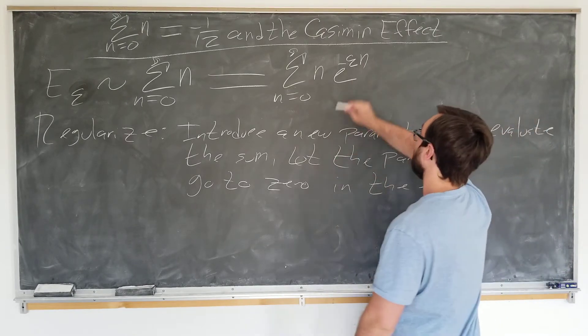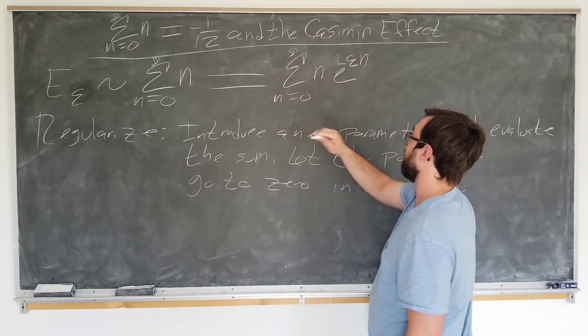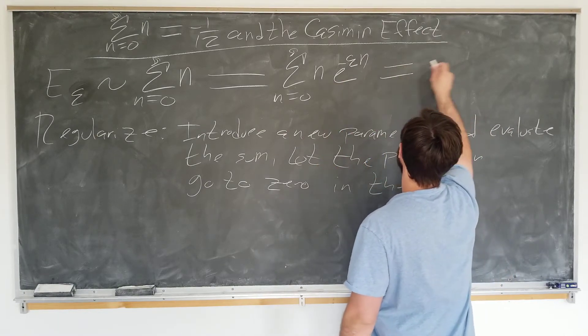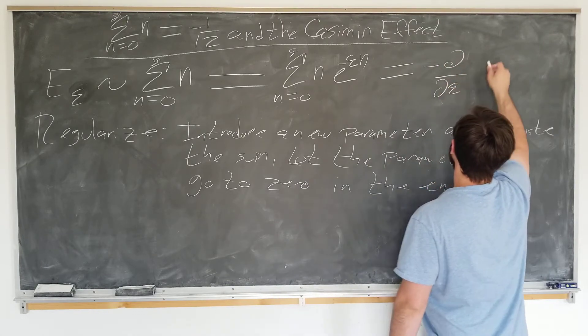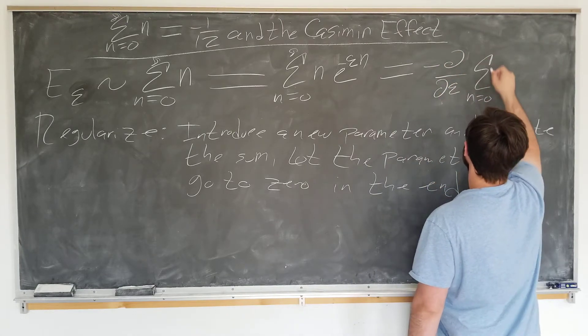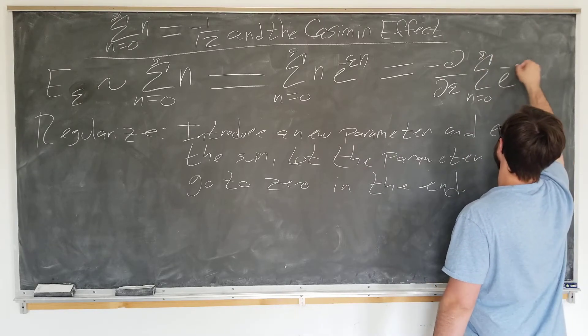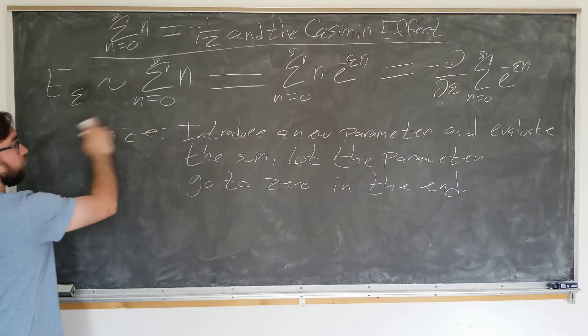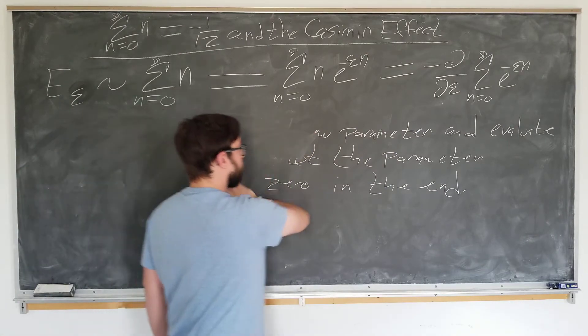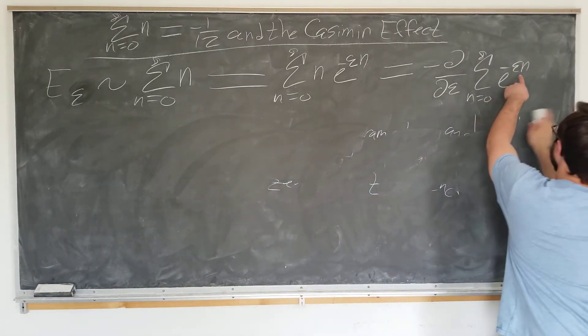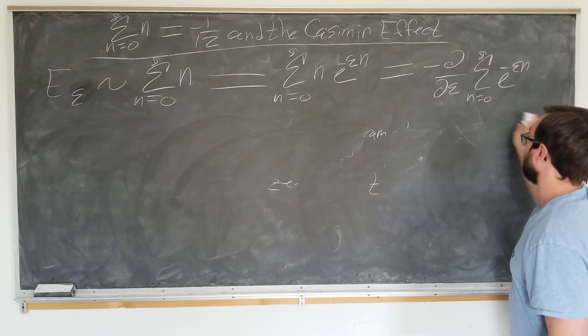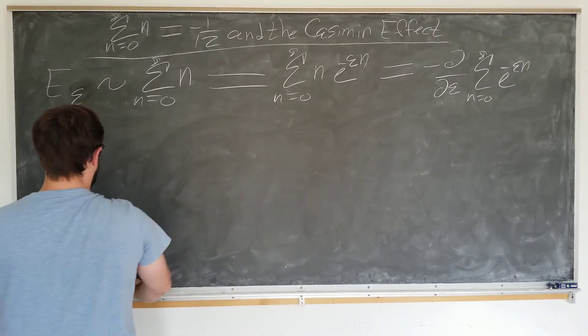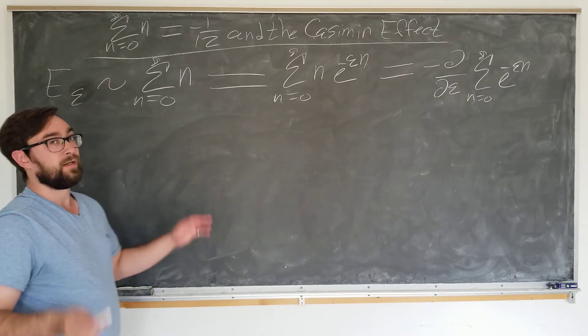Alright, let's first recognize that we can write this sum as a derivative of a simpler sum in epsilon. This is going to be minus d/dε, sum of e to the minus epsilon n. If you can't see it right away, just start from the right and work left. We start up here, take an epsilon derivative, it brings in a minus n, so we just have to put a minus n out front to accommodate for that.